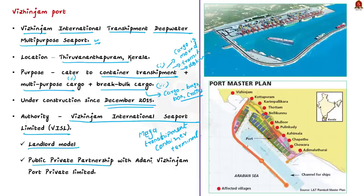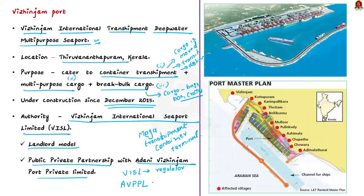In the case of Vizhinjam Port, the private partner is Adani Vizhinjam Port Private Limited. Adani Limited will carry on the construction and handle the cargo, while VISL will procure the land, obtain environmental clearance, and act as regulator. The main reasons Vizhinjam was chosen include: good connectivity to national road and rail networks (NH47 connecting Salem to Kanyakumari is within 10 km; rail network within 12 km); proximity to the international shipping lane (just 10 nautical miles away); and a seawater depth of 20 meters just one nautical mile from the coast, attracting large container vessels.